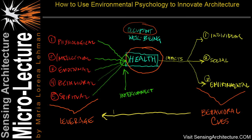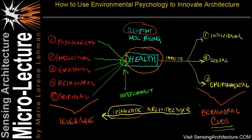From this, you can begin to innovate your architecture by looking at the behavioral cues that your occupants exude. You can distill these cues down into health characteristics — the physiological, intellectual, emotional, behavioral, and or spiritual — and begin to design environments that tap into each of these dimensions more holistically to help occupants thrive within your architectural space.